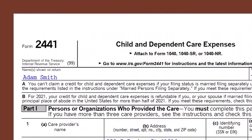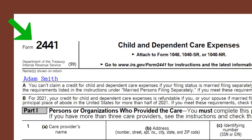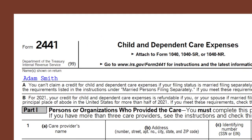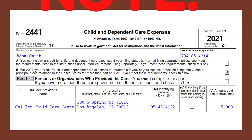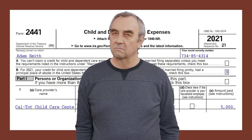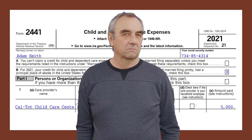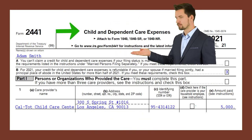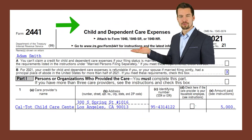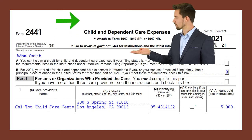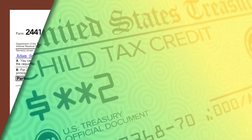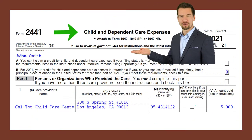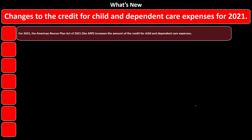We're looking at Form 2441, the Child and Dependent Care Expenses — that's the credit form we're focused on. Also note that we're not talking about the Child Tax Credit here; that's a different credit. We're talking about the Child and Dependent Care Expenses credit. They sound similar, but they're different.